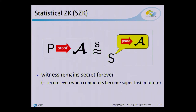Statistical zero-knowledge is a notion of zero-knowledge that guarantees that the adversary's view can be statistically simulated. In particular, it guarantees that after the protocol is executed, the witness remains secret forever. So it's a strong notion.